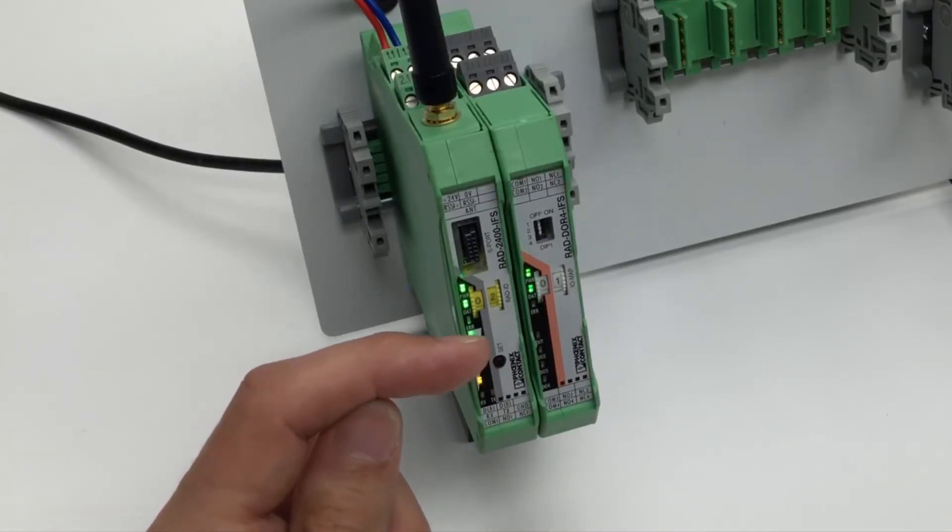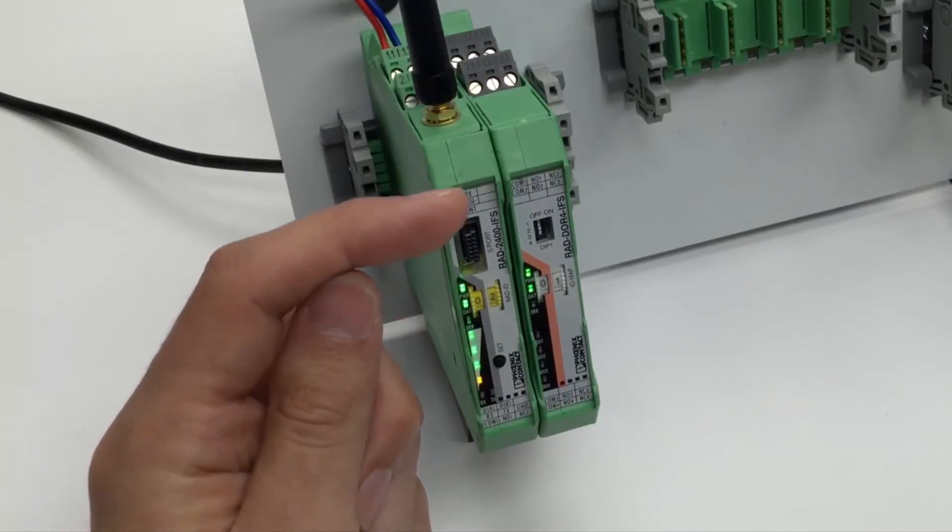Lastly, you can find the set button for confirming station changes, the yellow thumb wheel and the S-port configuration interface.